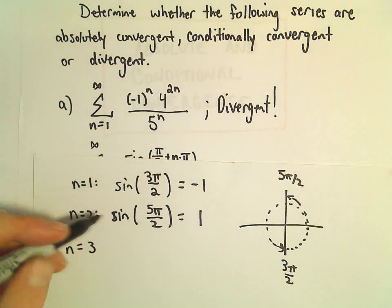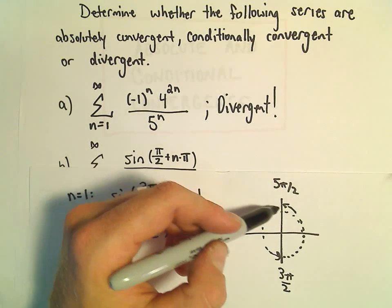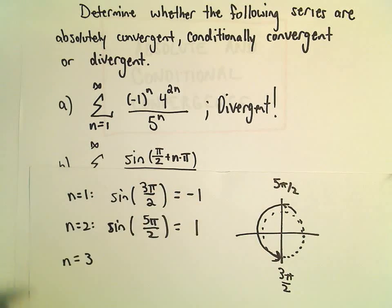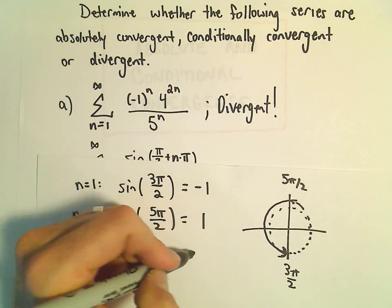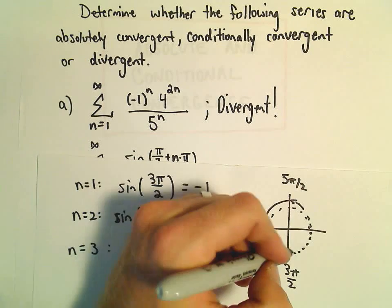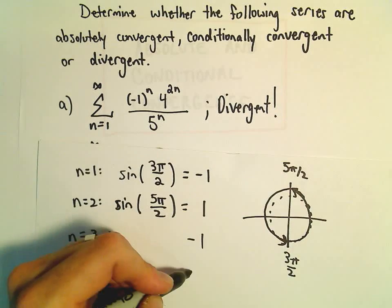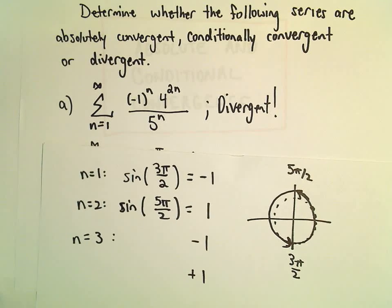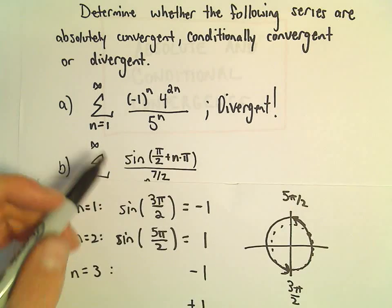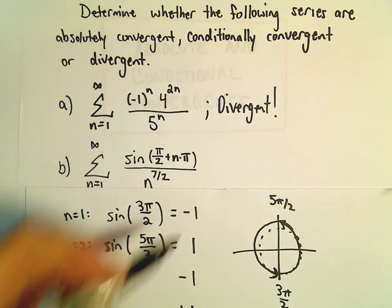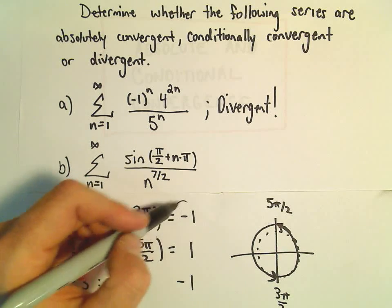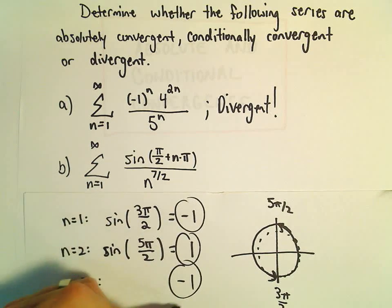Notice if we plug in n equals 3, we're just adding another multiple of pi, so we're going to be back at the bottom of the circle, so we'll get another negative 1. n equals 4, we'll be back at the top of the circle, so we'll get positive 1. So really, this is an alternating series. Sometimes it seems like people like to ask these questions just to try to fool you a little bit. So it starts negative, positive, negative, positive.